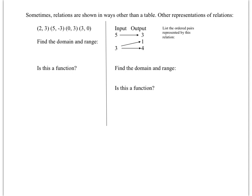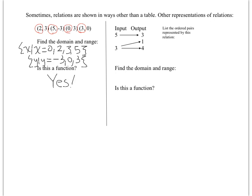Sometimes relations are shown in other ways besides a table. If given a list of ordered pairs, I write the domain starting with 'x such that x =' and list all x values in order: 0, 2, 3, 5. Stop the video and write the range and answer whether this is a function. The range is the y values listed in set notation. Since the x values — 2, 5, 0, 3 — none repeat, yes, this is a function.